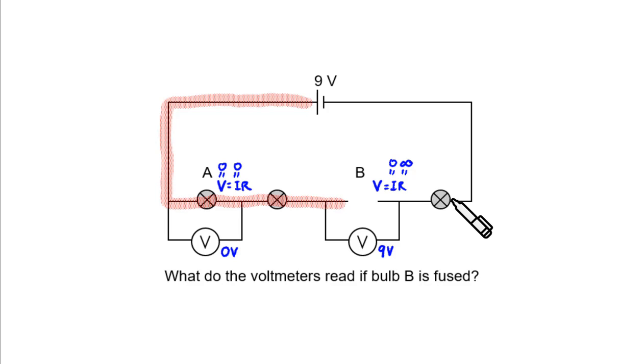Likewise, there's no potential difference across this bulb because there's no current flowing through it, which means the potential is the same at all these points. So if the potential here is zero volt, then the potential here is zero volt, and here is zero volt.